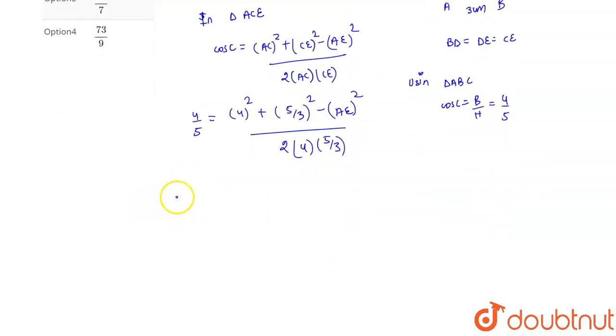Further, on cross multiplication we get 4 by 5 multiplied by 2 multiplied by 4 multiplied by 5 by 3 is equal to 4 square is 16 plus 5 square is 25 divided by 3 square is 9 minus AE whole square.